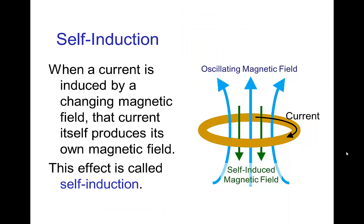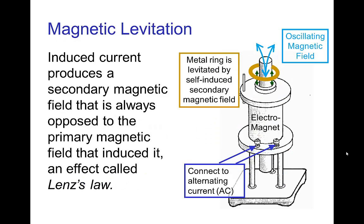Now one thing that happens is when this oscillating magnetic field induces a current, that current, we know that whenever we have a current moving in a coil, that produces an electromagnet. So this oscillating magnetic field creates a current, that current produces an electromagnet, and this effect is called self-induction.